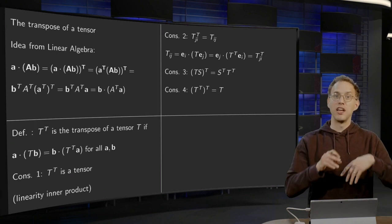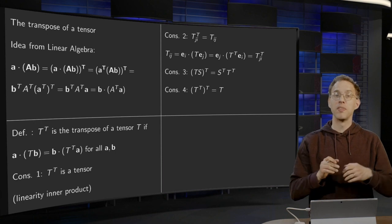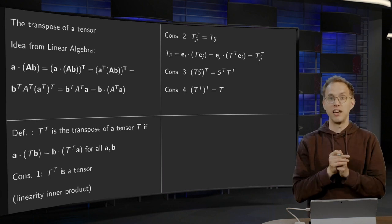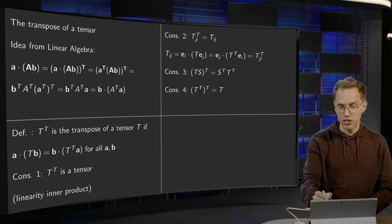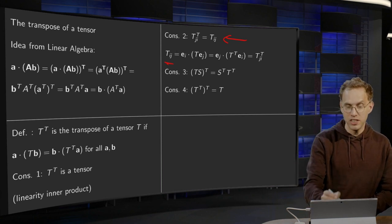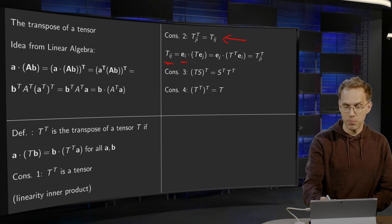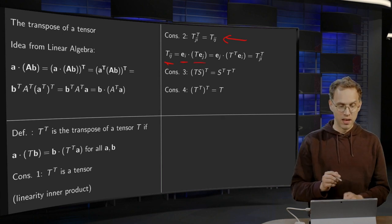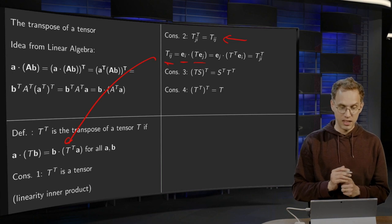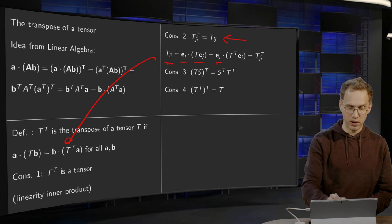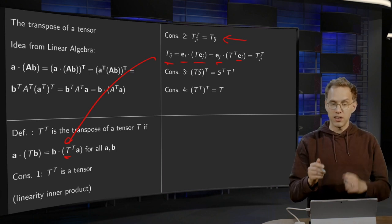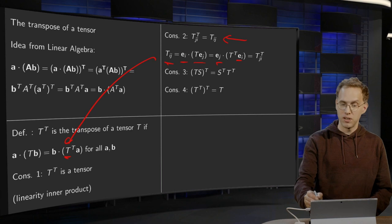The second consequence is: if you take the matrix representation of T, then T transpose has components (T transpose)_ij = T_ji — you interchange the indices. Let's see why. T_ij is by definition E_i inner product T E_j. From this rule, setting A equals E_i and B equals E_j, we get that this equals E_j inner product T transpose times E_i, which by definition gives us exactly (T transpose)_ji.